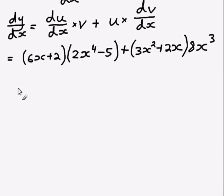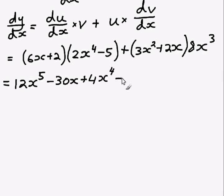So now we've just got to simplify this expression as much as possible, remember you're always trying to give your answer in the simplest form you can. So let's try multiplying out all the brackets, so 6x times 2x to the power of 4 is 12x to the power of 5, 6x times negative 5 is minus 30x, 2 times 2x to the power of 4 is 4x to the power of 4, and 2 times negative 5 is negative 10. Now we can move on to the next half of it, 3x squared times 8x cubed equals 24x to the power of 5, and 2x times 8x cubed equals 16x to the power of 4.